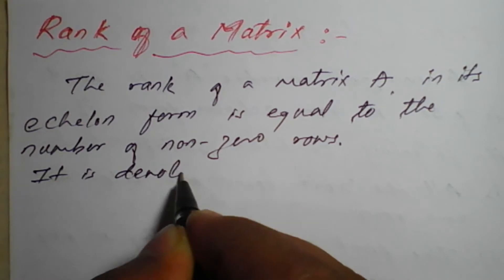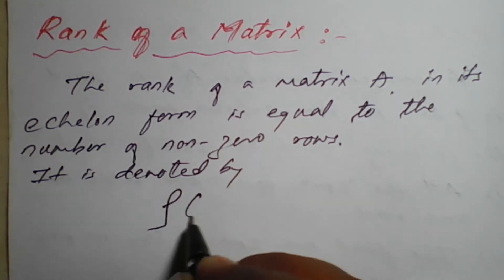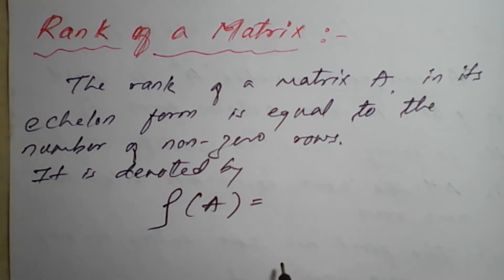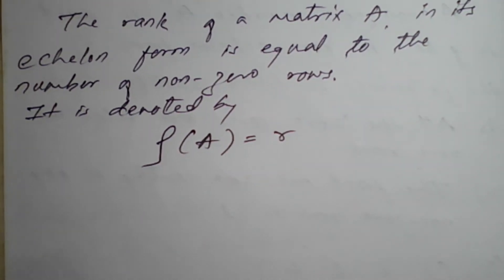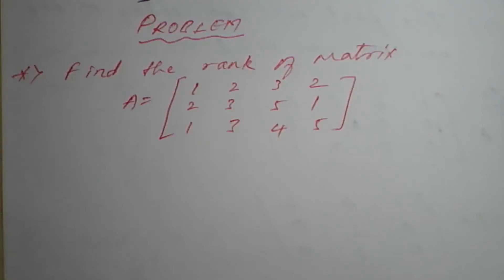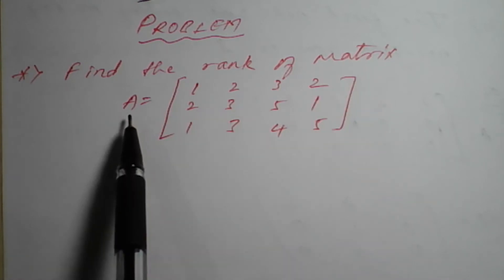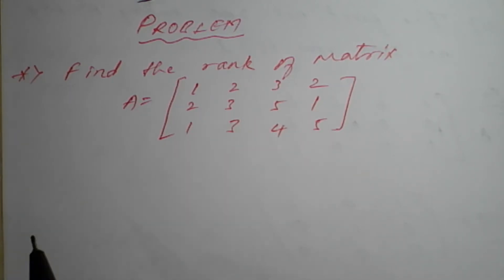The rank is denoted by the symbol ρ (rho). So ρ of matrix A is equal to r, where r stands for rank. If you take one example it will be more clear — how to reduce to echelon form and then calculate the rank. The problem is: find the rank of matrix A equal to [1, 2, 3, 2 / 2, 3, 5, 1 / 1, 3, 4, 5].